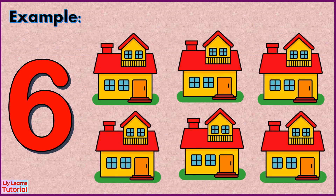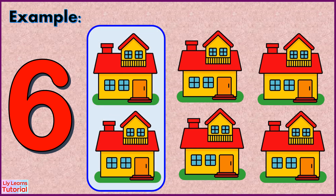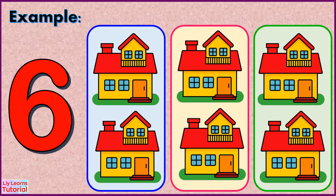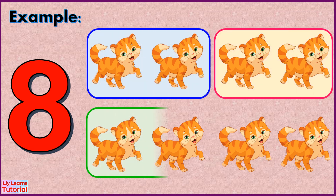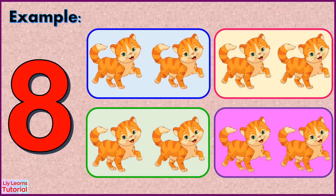Let's have some more examples. The number six can be divided into three groups of two, and there are no groups of one. The number eight can be divided into four groups of two, and there are no groups of one.